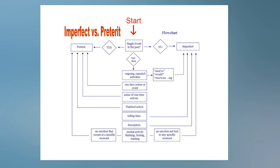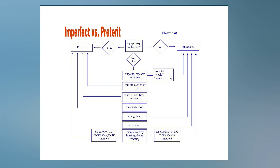In this case, you can see that the box 'ongoing, repeated activities' matches the idea of 'every day.' And following its arrow, you also encounter alternative translations before being directed to the imperfect. Using the flowchart, let's practice choosing either the imperfect or preterite to express the following sentences. We will use English and give hints as to the thought behind the verb.